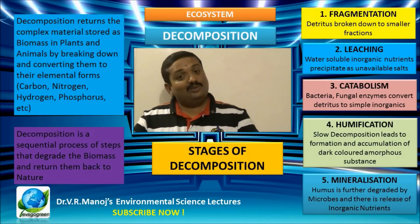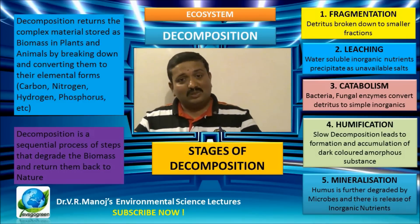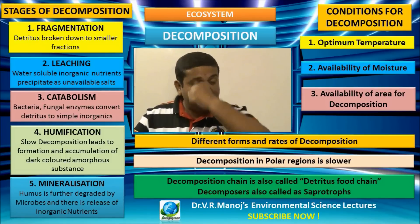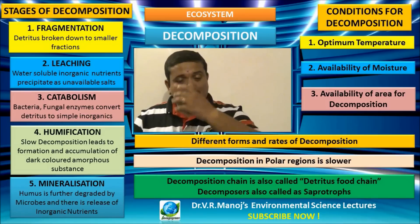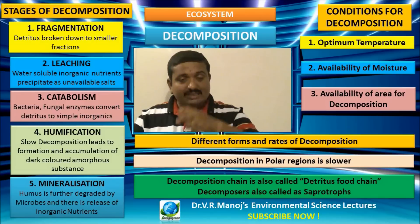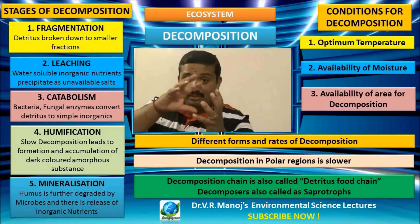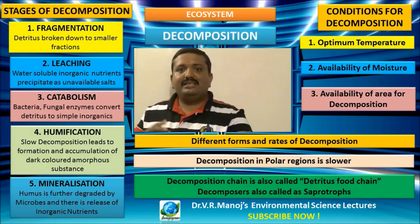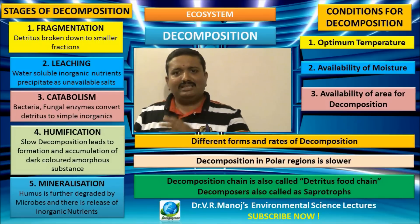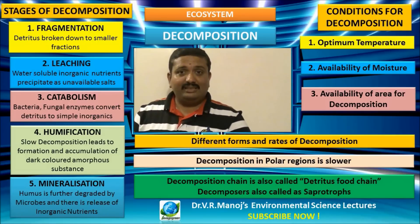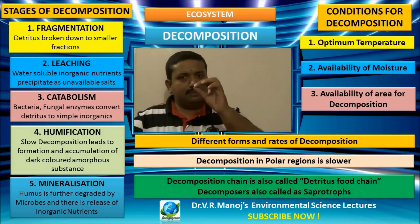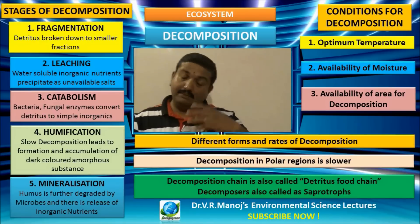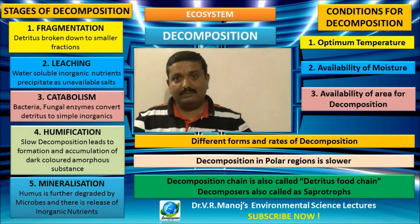It is very important to understand under what conditions decomposition takes place, as it is a chemical process requiring cooperation of environmental factors: correct climate, ample moisture, presence of microorganisms, and favorable temperature. Decomposition happens rapidly in forests due to variety of organisms, but in polar regions where temperature is very low it takes much longer. The decomposing food chain is also referred to as the detritus food chain, and decomposers are also called saprotrophs.